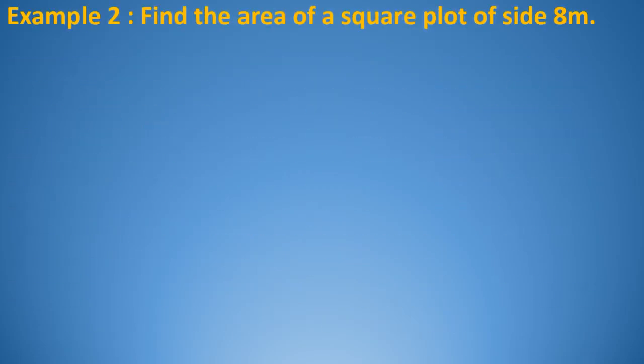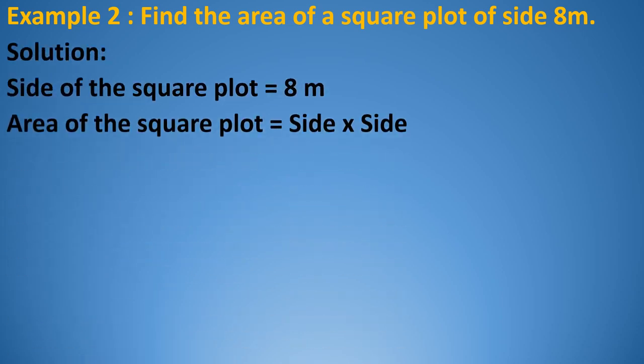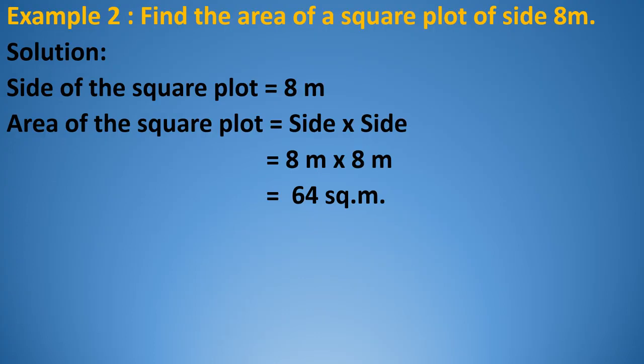See the second example: Find the area of a square plot of side 8 meters. This is a square plot and only one side is given — 8 meters. Side of the square plot equals 8 meters. Area of a square plot equals side multiplied by side, that is 8 meters multiplied by 8 meters, which is 64 square meters. Meter multiplied by meter gives square meters.